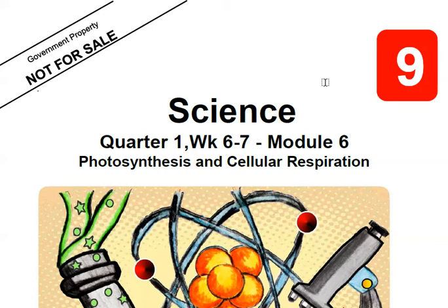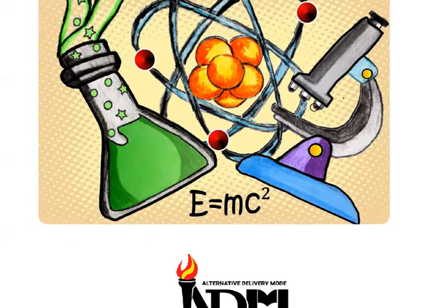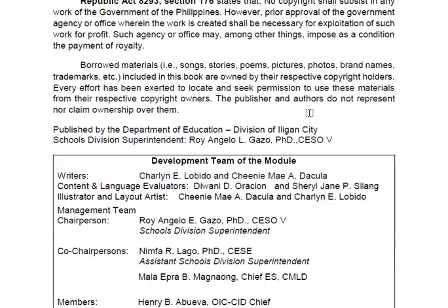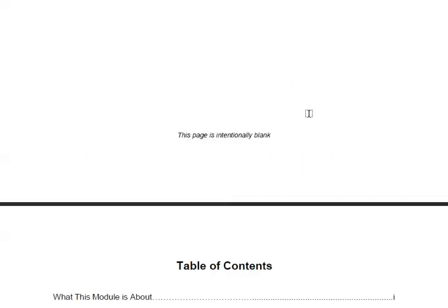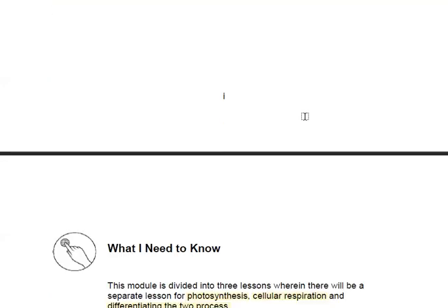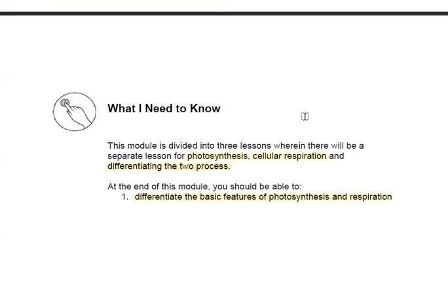Hi everyone, this is Teacher Chaska and this is Science 9, Day 6. We will be using Module 6, Photosynthesis and Cellular Respiration. So for this morning, this is the morning session, our objective is to learn about photosynthesis, cellular respiration, and how to differentiate the two process.